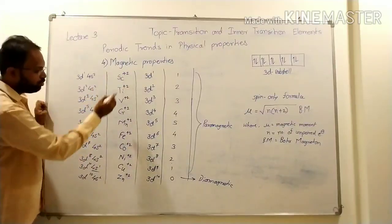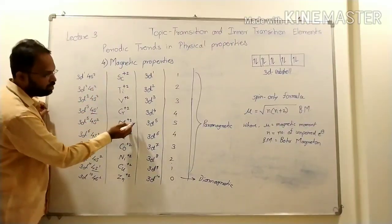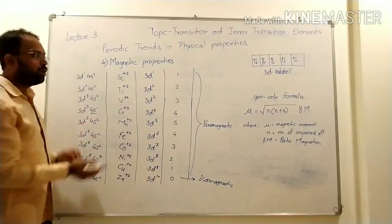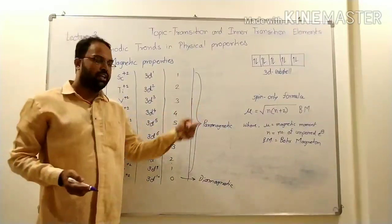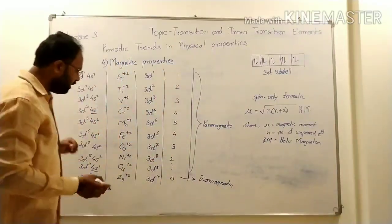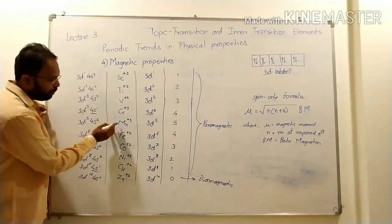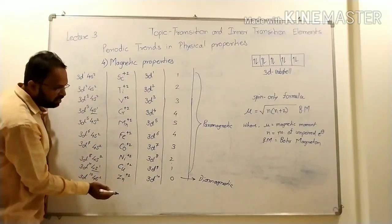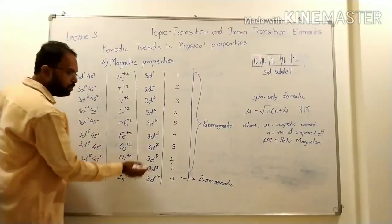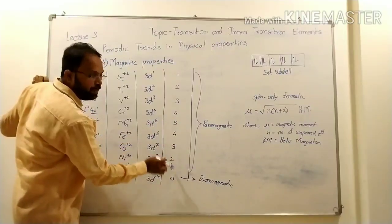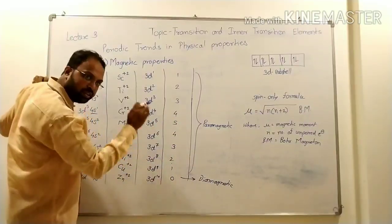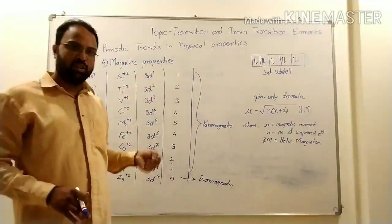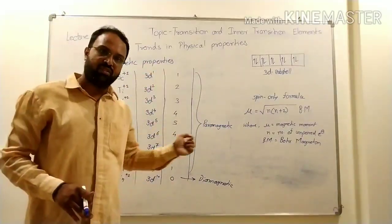From scandium²⁺ to manganese²⁺, magnetic moment increases because unpaired electrons increase. Then from manganese²⁺ to zinc²⁺, magnetic moment decreases due to unpaired electrons decreasing. That is the trend of magnetic properties in the first transition series.